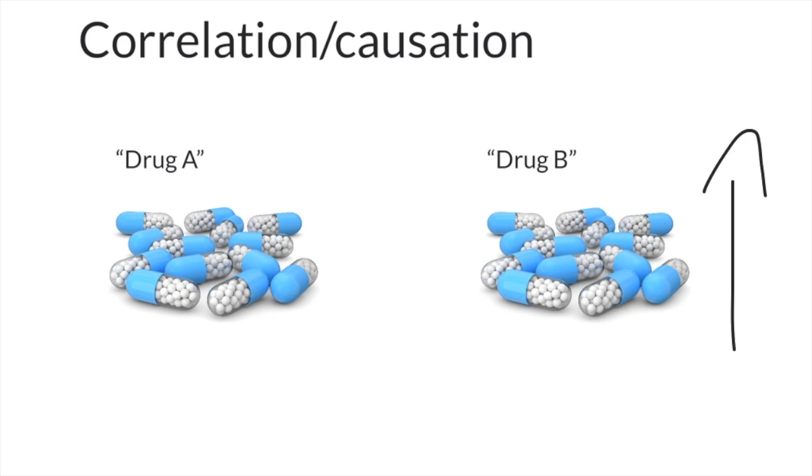However, this claim misses one major point. People who take drug A and people who take drug B are not comparable to each other. The statistics allow us to measure that taking drug B is correlated with a higher suicide rate, but the data also supports the explanation that patients with a higher risk of suicide are more likely to be prescribed drug B, so the drug may actually be better than A. There's a lot more to the story than just looking at two numbers.